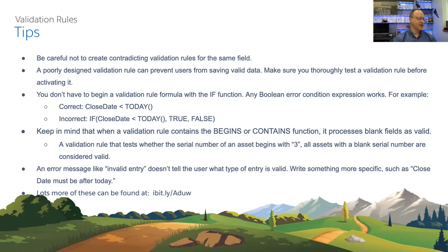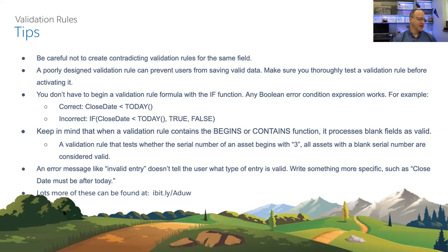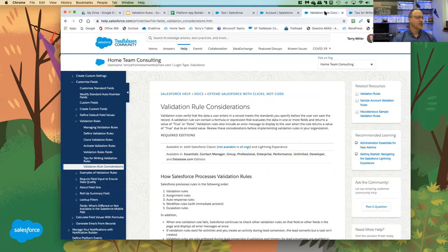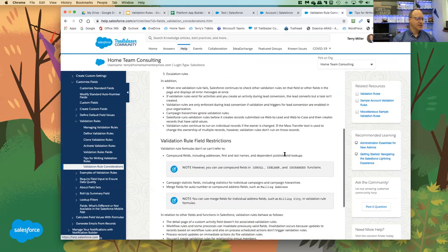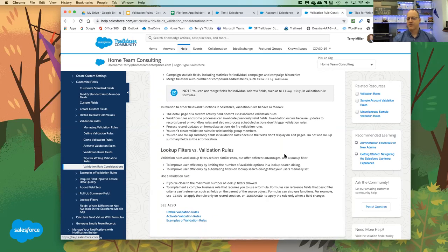An error message like 'invalid entry' doesn't tell the user what type of entry is valid — make error messages clear so users know what they need to do. There are links to validation rule considerations and tips for writing good validation rules — worth reading through before the exam.